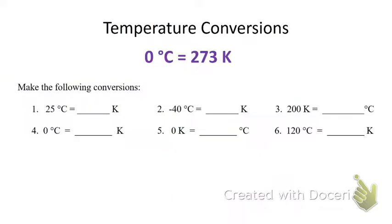But let's just practice some of these temperature conversions real quick. And I just put that equation that we need to be able to use on here. So in that first one, we're going from Celsius to Kelvin, zero to 273. So I'm adding 273, and 25 plus 273 is 298.